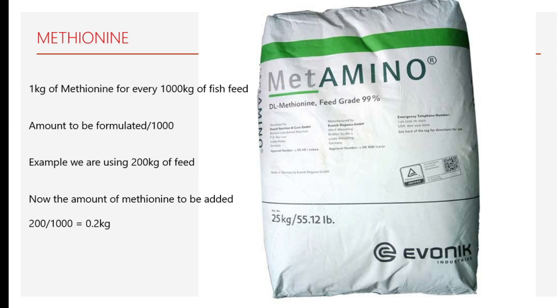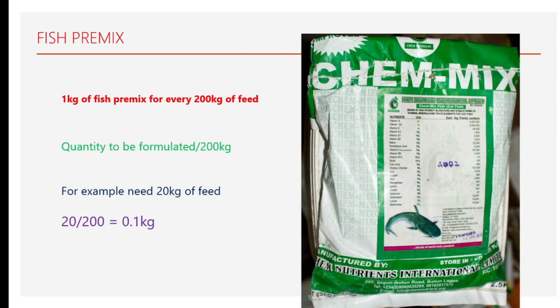The second thing we are going to look at is fish premix. To ensure adequate presence of minerals and vitamins in feed, fish premix needs to be added to every feed you are formulating. It is recommended to add 1 kg of fish premix for every 200 kg of feed. The formula to use is: quantity to be formulated divided by 200 kg.